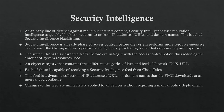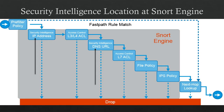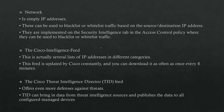Security Intelligence is considered the first line of defense after the core pre-filter. As we can see in the diagram, Security Intelligence is positioned here. We have two positions for it: one for IP address after the pre-filter, and after that the access control, then Security Intelligence DNS and URL, because we have three types.